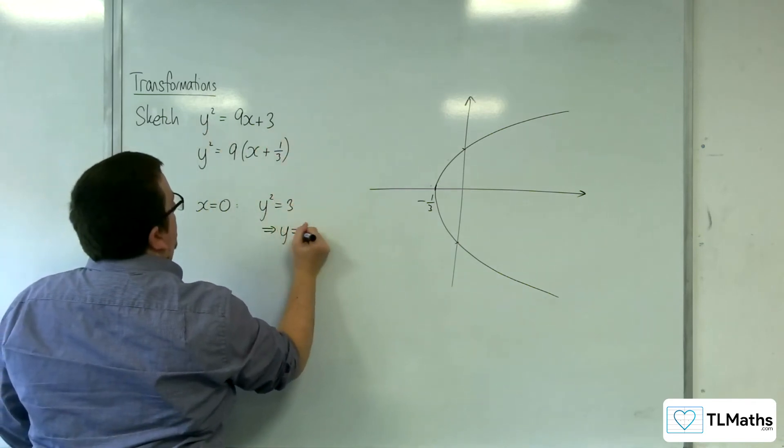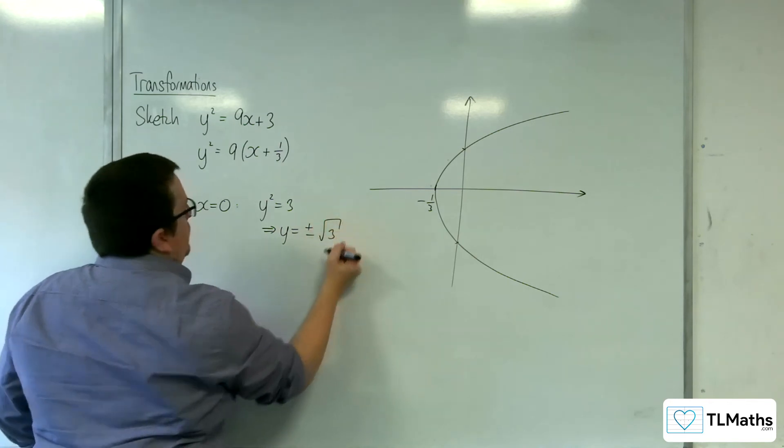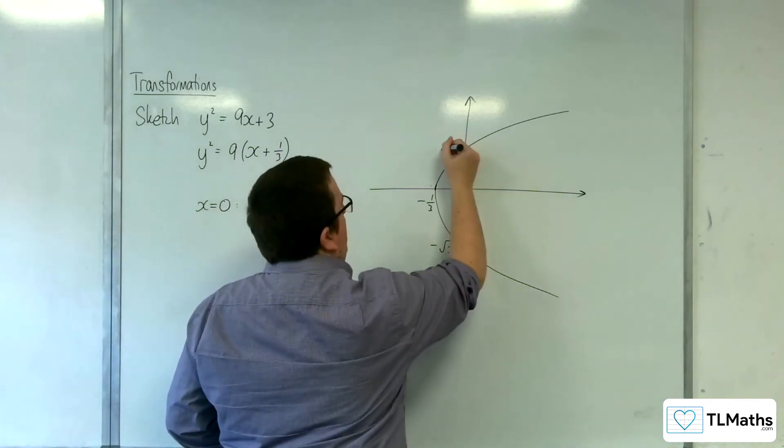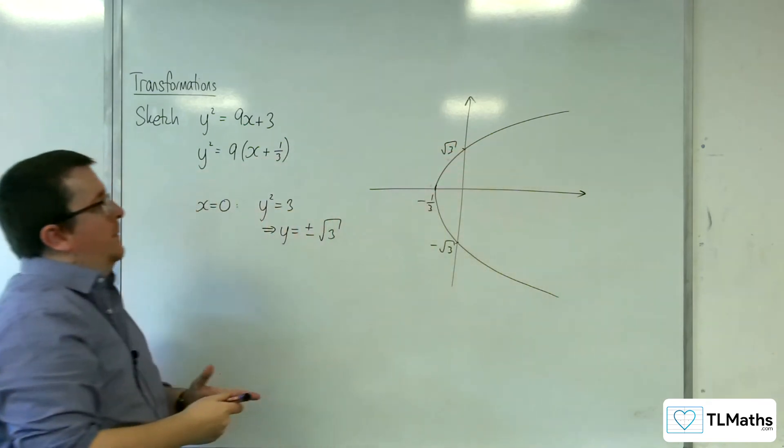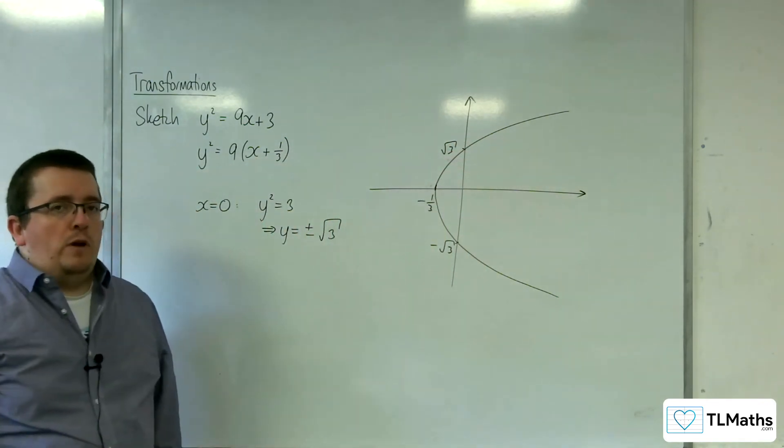So y is equal to plus or minus root 3. So that would be minus root 3 and positive root 3. And so that would be the sketch of my graph.